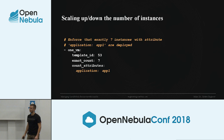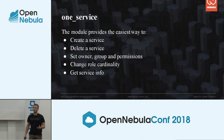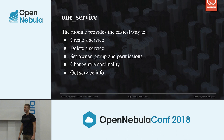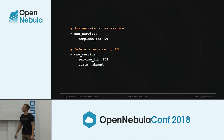The next module is the one_service module, which we can use to manage OpenNebula services. We can either create or delete a service, change role cardinality, get service info, and so on. Here are examples of how we can do that — we can initiate a new service by specifying a template ID, or we can delete a service with its ID.